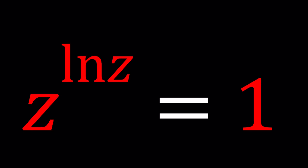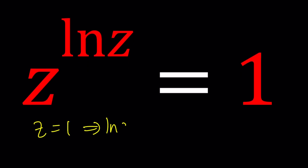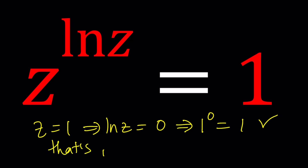So first of all, let's try to keep things simple. What happens if z equals 1? Obviously, if the base is 1, then any power will give us 1, including the 0th power. So if z is equal to 1, then ln z is going to be 0. And 1 to the power of 0 is going to be 1. But that's not the whole thing.